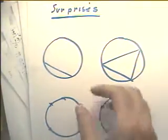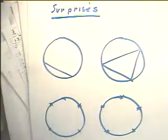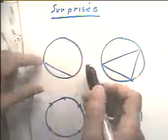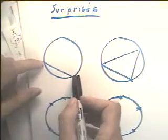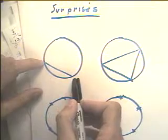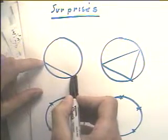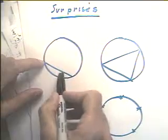We can get surprises when we do sequences. Let's look at this sequence of circles. The point of this first circle is I've got two points on the outside of the circle. I'm going to connect those two points with a straight line, and that divides the circle into two regions.